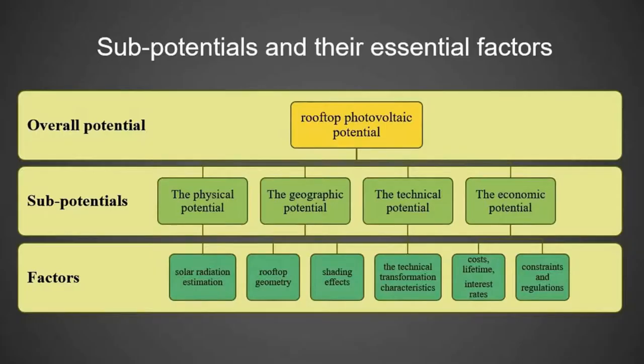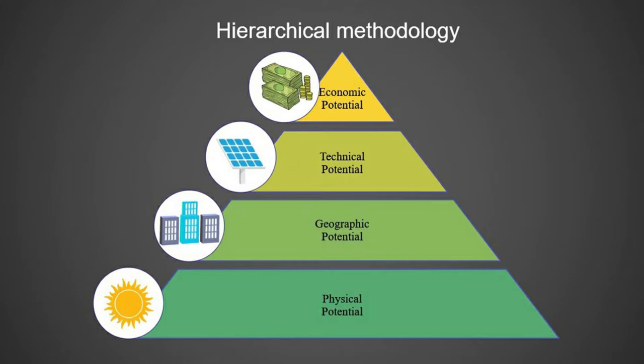One of the essential steps is defining the data sources. While factor selection strongly depends on the project scales and data availability, four different sub-potentials — namely physical potential, geographical potential, technical potential, and economical potential — must be evaluated to determine rooftop photovoltaic overall potential.